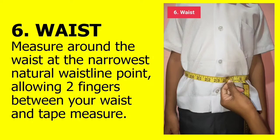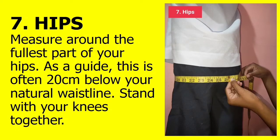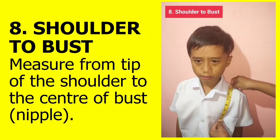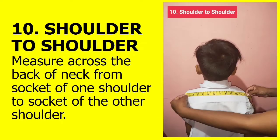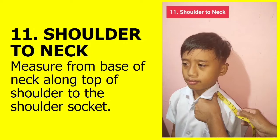Six, waist: measure around the waist at the narrowest natural waistline point, allowing two fingers between your waist and tape measure. Seven, hips: measure around the fullest part of your hips; as a guide, this is often 20 cm below your natural waistline — stand with your knees together. Eight, shoulder to bust: measure from the tip of the shoulder to the center of bust or nipple. Nine, front shoulder to waist: measure from tip of shoulder over bust to natural waistline. Ten, shoulder to shoulder: measure across the back of neck from socket of one shoulder to socket of the other. Eleven, shoulder to neck: measure from base of neck along top of shoulder to the shoulder socket.